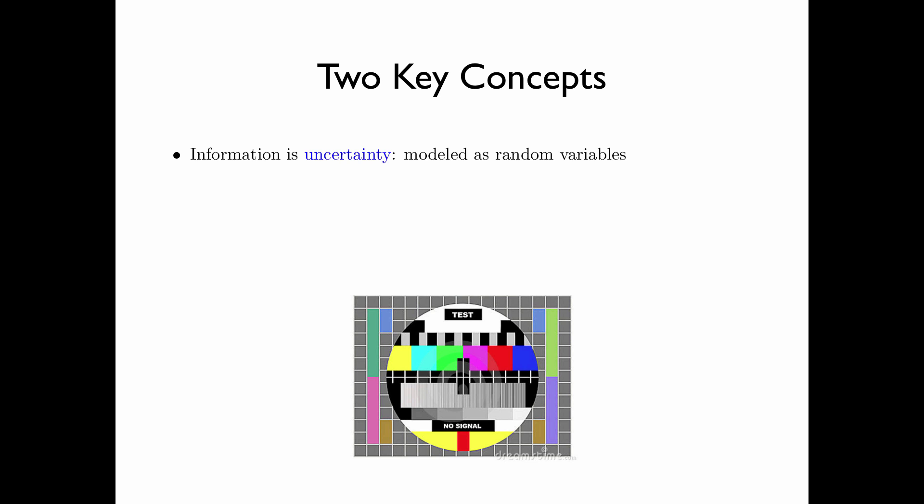From the transmission point of view, this is completely redundant because the TV set can simply store the pattern in a memory, and then no more transmission is necessary. The point here is that there must be uncertainty associated with the information source. Otherwise, it does not need to be transmitted at all. So naturally, an information source is modeled by a random variable.